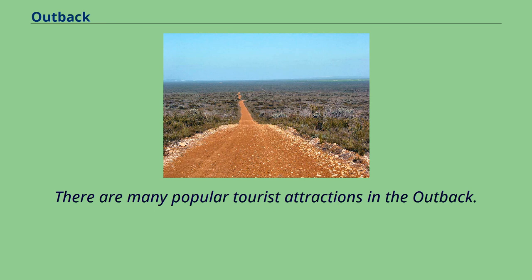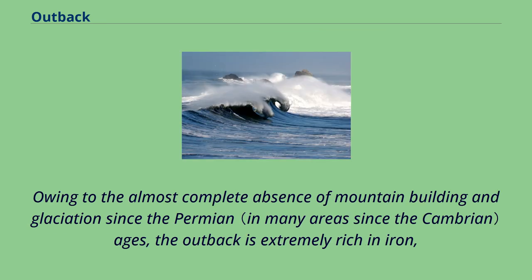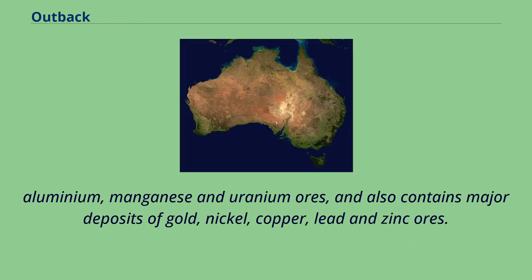There are many popular tourist attractions in the outback. Other than agriculture and tourism, the main economic activity in this vast and sparsely settled area is mining. Owing to the almost complete absence of mountain building and glaciation since the Permian Age, the outback is extremely rich in iron, aluminium, manganese and uranium ores.